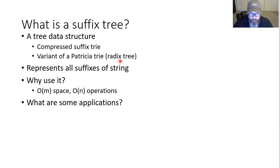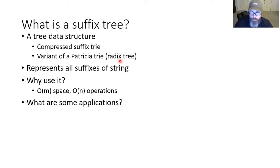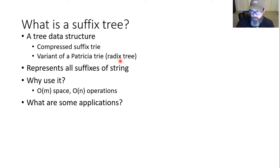We want to use it because it takes up linear space. If you have a very large text, there are operations you can use — such as searching for a substring — that you can do linearly in proportion to the length of the substring you're searching for. So rather than searching a huge text, once we've constructed our suffix tree, we can find what we're looking for in proportion to a relatively much smaller string.